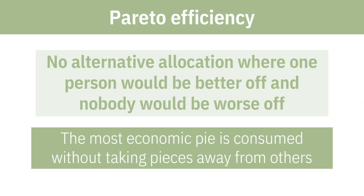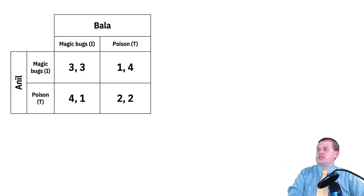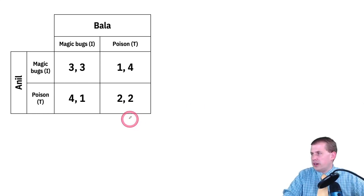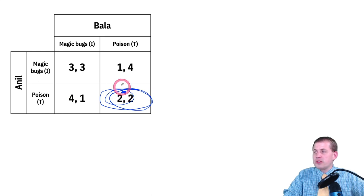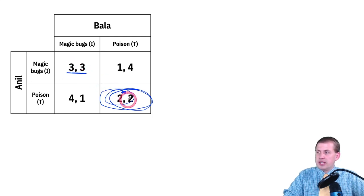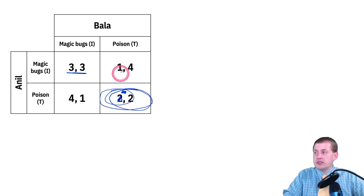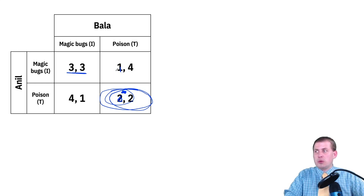What this really means is that the most economic pie — the most utility or points — is consumed without taking pieces away from others. Here's our Anil and Bala prisoner's dilemma, where they both end up poisoning each other at the Nash equilibrium of 2-2. They could move to a 3-3 world, making everybody better off — going from 2 to 3 for both Anil and Bala. But moving from 2 to 1 is bad for Anil and breaks Pareto efficiency.